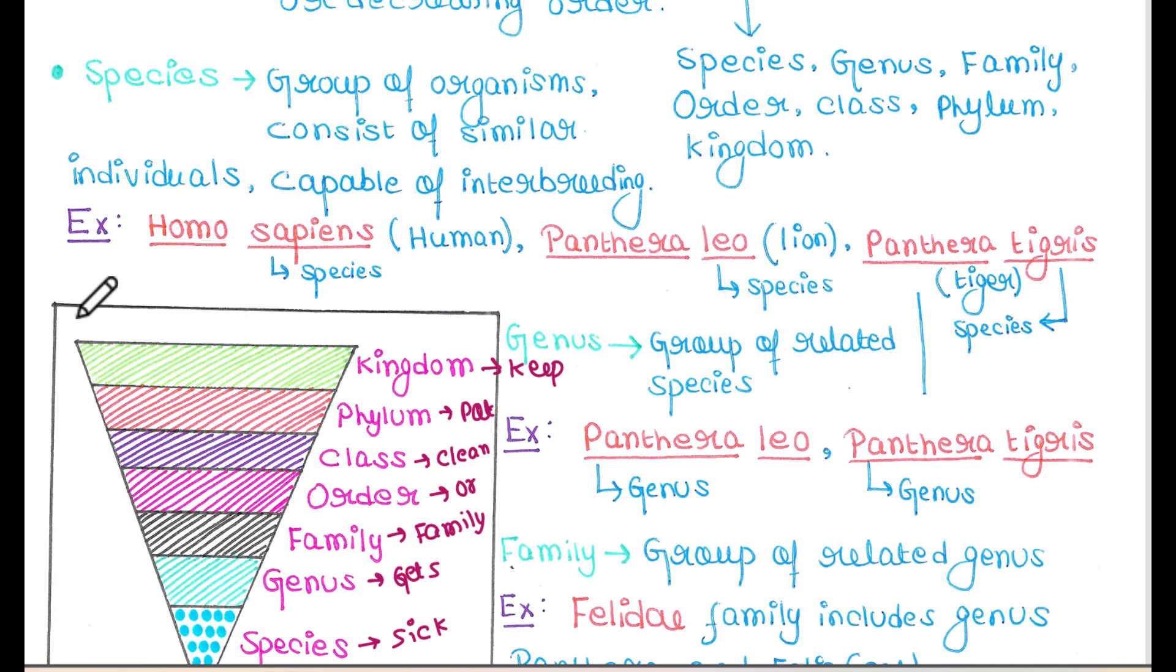For example, the scientific name of humans is Homo sapiens. Here sapiens is the species. The scientific name of lion is Panthera leo, where leo is the species. The scientific name of tiger is Panthera tigris, and tigris is the species.